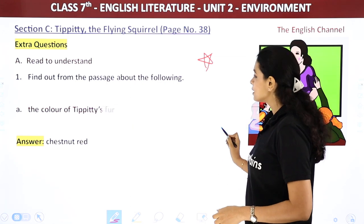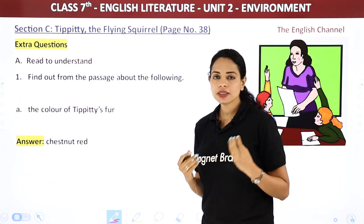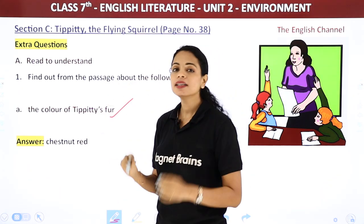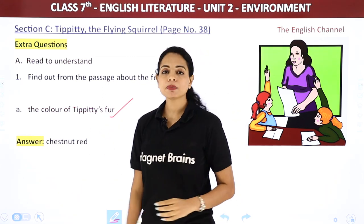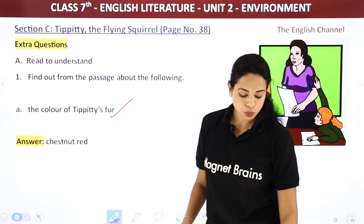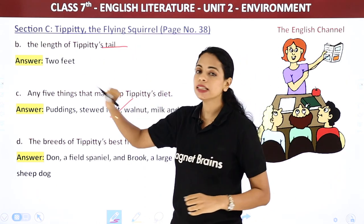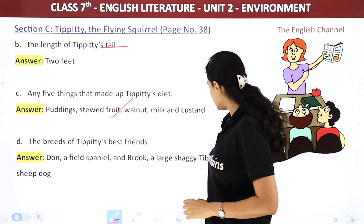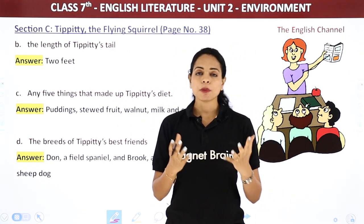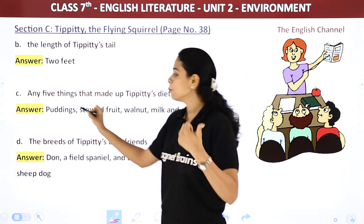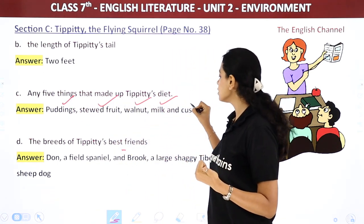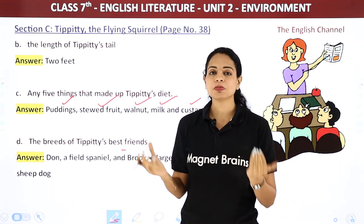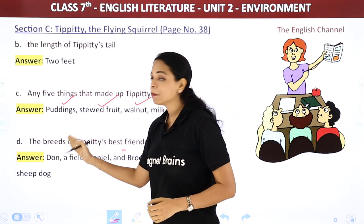Now we have to find certain details from the passage. The color of Tippity's fur was chestnut red — a very easy answer. The length of her tail was two feet long. Any five things that made up Tippity's diet: puddings, stewed fruit, walnut, milk, custard, and leaves.